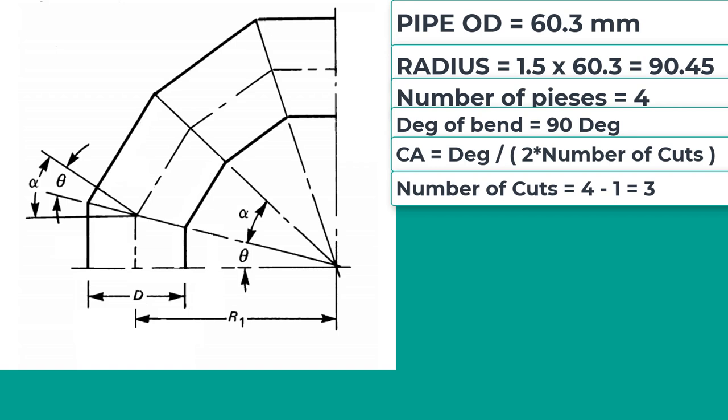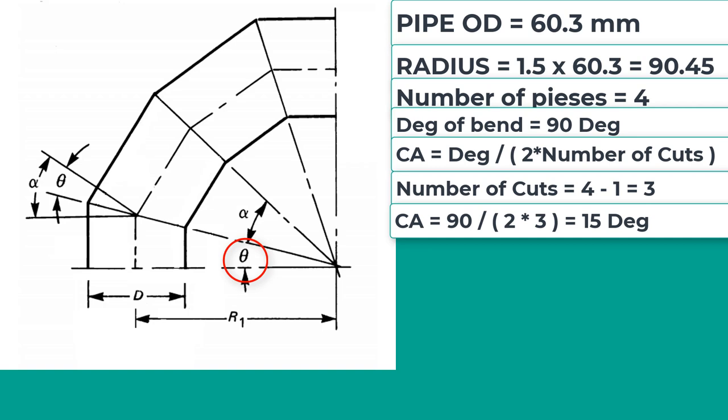Since we are going to make this with 4 pieces, the number of cuts equal to 4 minus 1 equal to 3. Cutting angle CA equal to 90 divided by 2 into 3 equal to 15 degree.